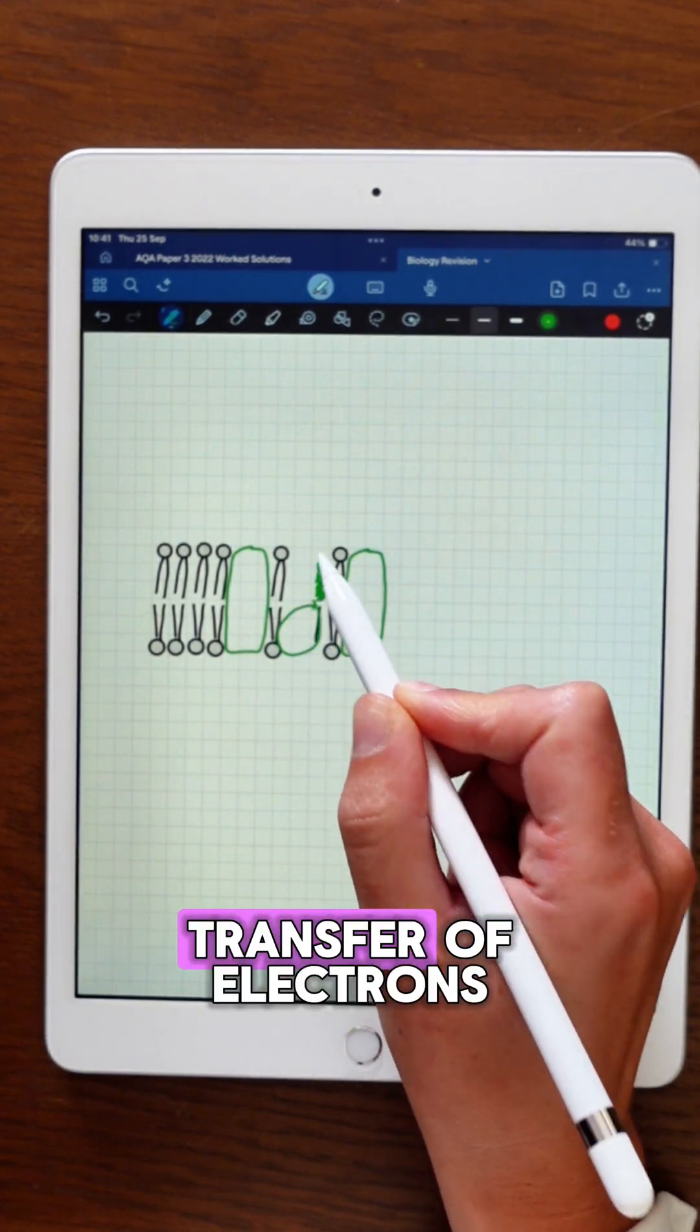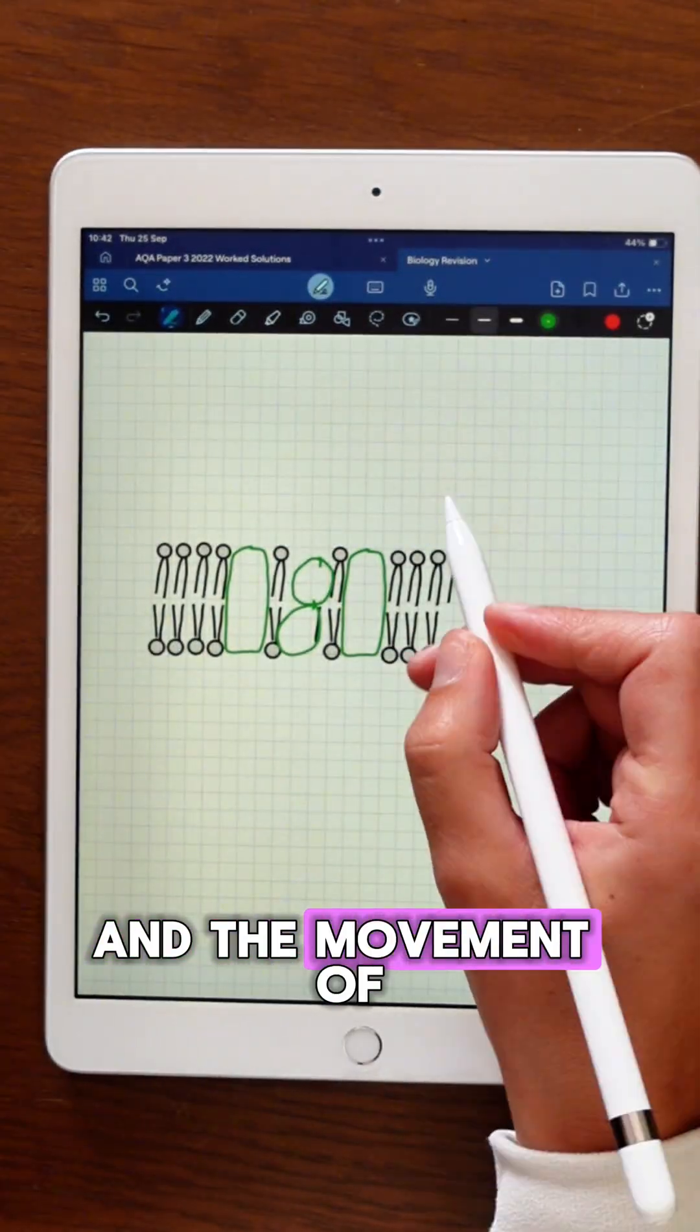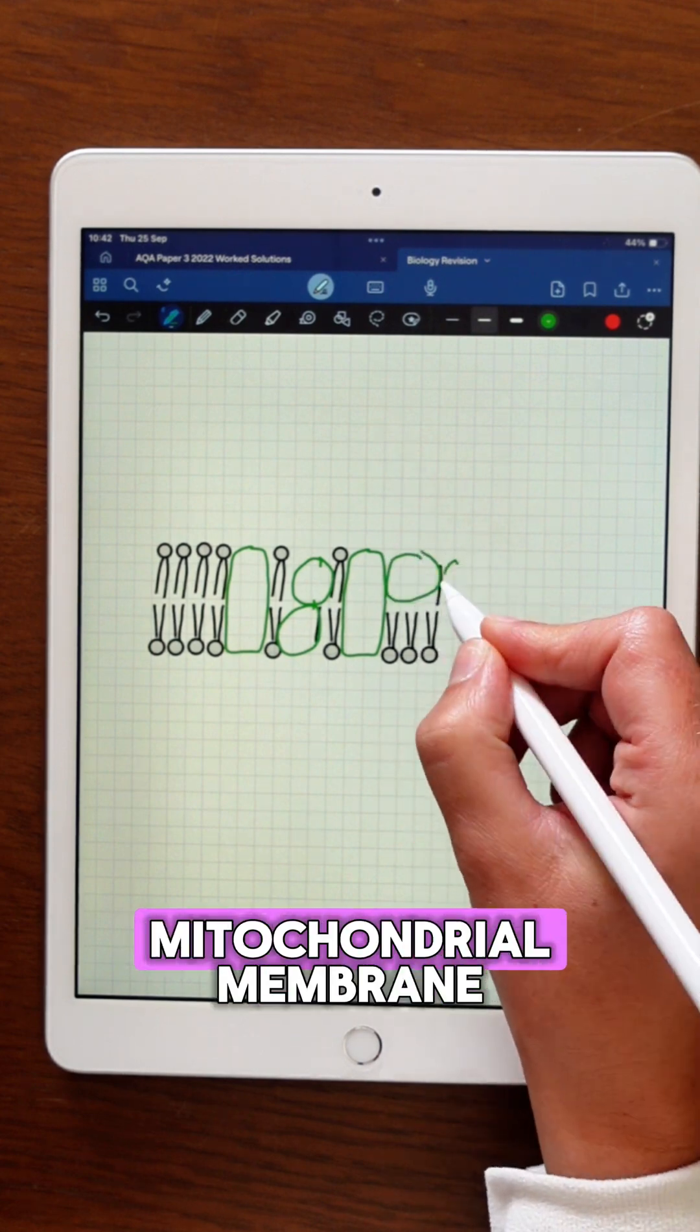This stage involves the transfer of electrons down the electron transfer chain and the movement of protons across the inner mitochondrial membrane.